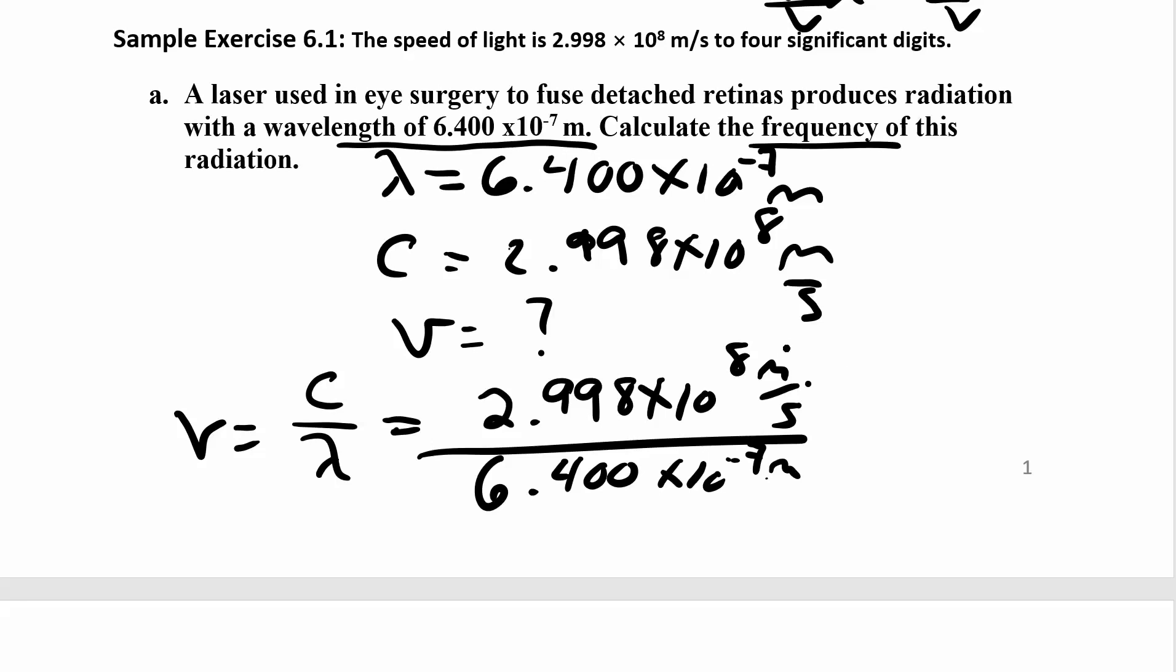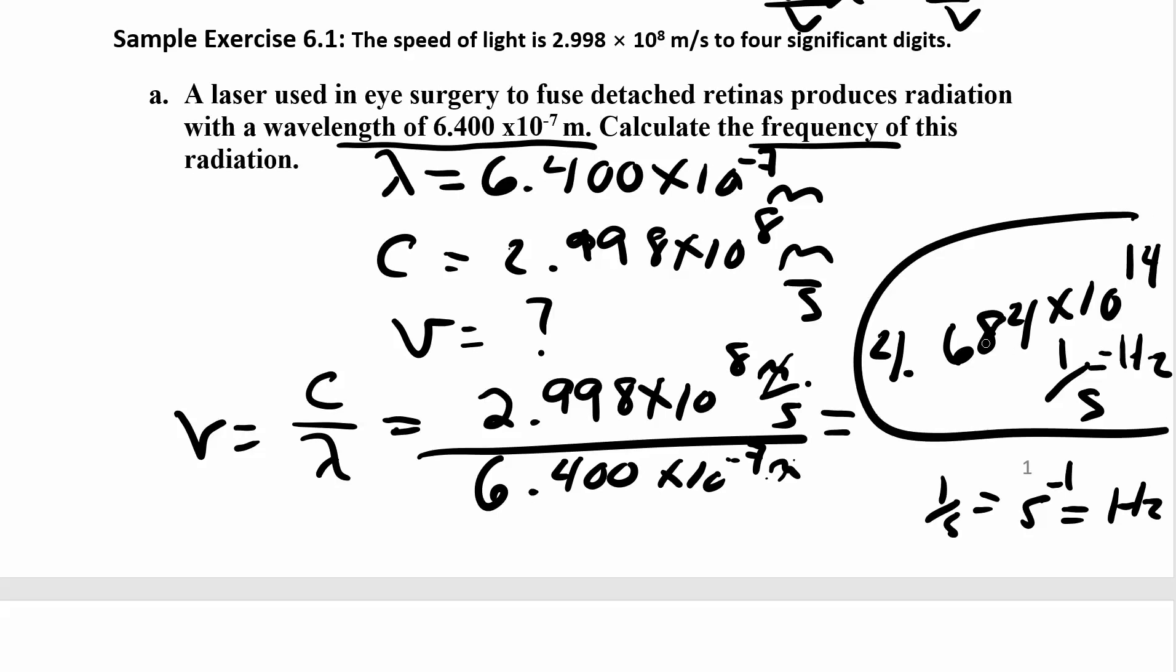So your meters are going to cancel, and you're going to end up with something in 1 over seconds. 1 over seconds is frequency. Another unit for that is going to be the hertz. So when you work all this out, you get 4.684 times 10 to the positive 14. And your units again are 1 over seconds or seconds to the negative 1 or hertz. All three of those mean exactly the same thing. So you should be familiar with all of them.